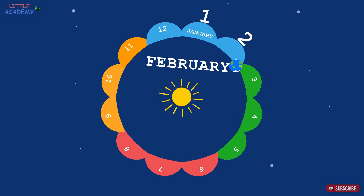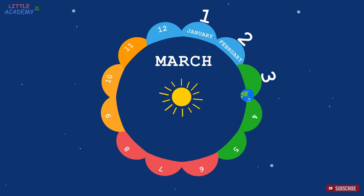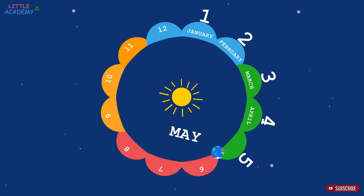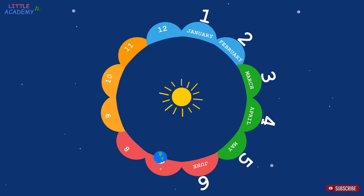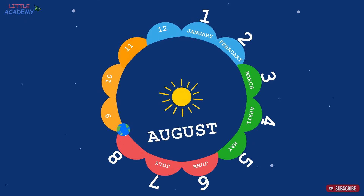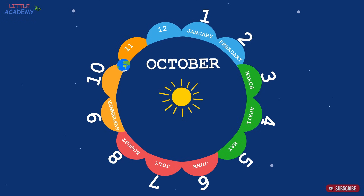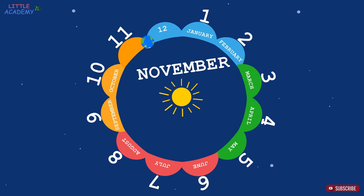The third month is March, the fourth is April, the fifth is May, the sixth is June, the seventh is July, the eighth is August, the ninth is September, the tenth is October, the eleventh is November.